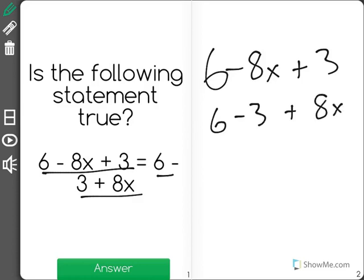Now let's look at our terms. First we have 6 and 6, those are good. Then we have 3 and negative 3, so those two are not equal. Neither are negative 8x and positive 8x. So this statement is not true.